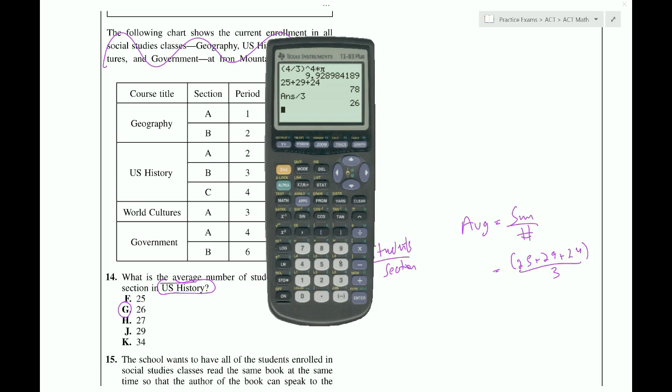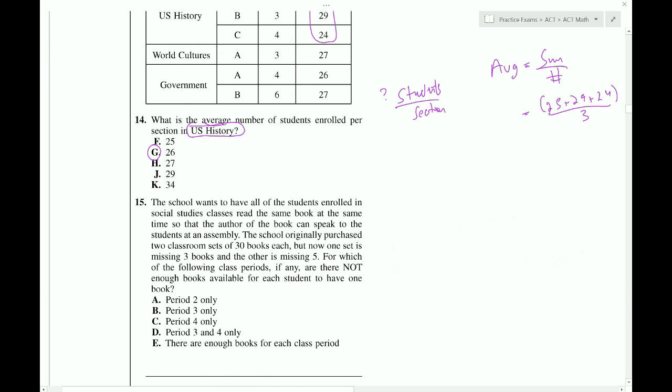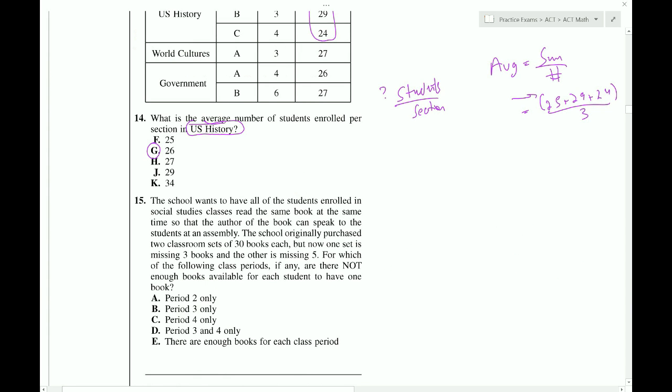25 plus 29 plus 24. If I just put an equals there, I'll get the numerator. Then divide that by three. And I get 26. So, just to reiterate, if I was to do 25 plus 29 plus 24 and then divide that by three right away, it would only do a 24 over three, which would give me eight. And then it would add the rest. So, it would come out incorrect. You can remedy that with parentheses around the entire numerator. Or do it as I showed.